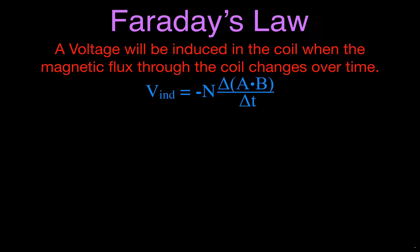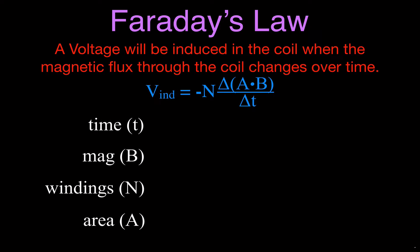This is the equation we use to calculate the magnitude of the induced voltage. The induced voltage is equal to minus N — N is the number of windings — times the magnetic flux. The magnetic flux is calculated as the change in the area times the change in the magnetic field strength, divided by the time over which that change occurs. We can see from this equation that there are four things — N (number of windings), A (area), B (magnetic field strength), and T (time) — that will affect the induced voltage.